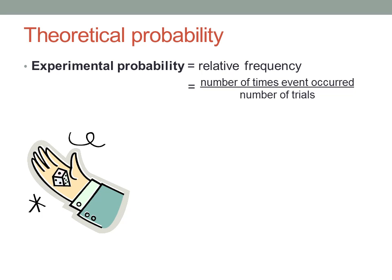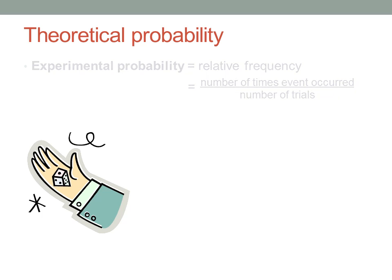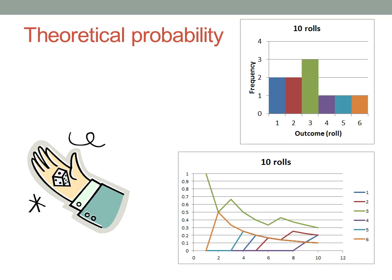Suppose I roll a normal six-sided die. There are six possible outcomes, numbered one through six. I might do the experiment ten times, ten rolls, and get a distribution like this.